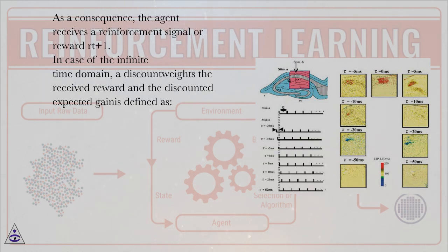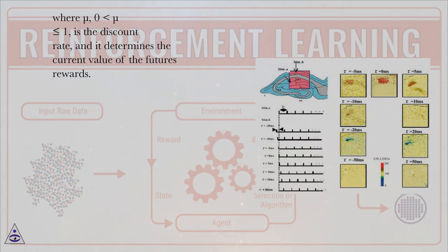In case of the infinite time domain, a discount weights the received reward and the discounted expected gain is defined. Where μ, 0 < μ ≤ 1, is the discount rate, and it determines the current value of future rewards.